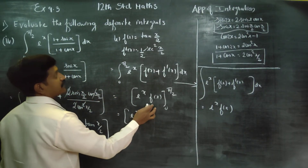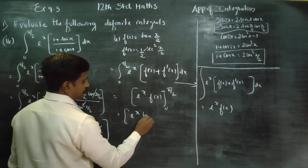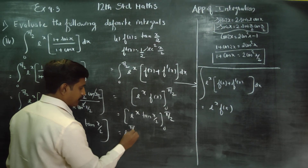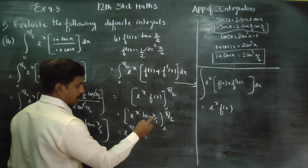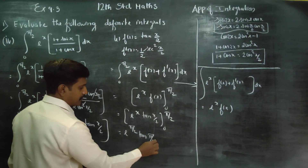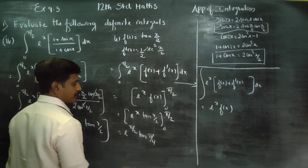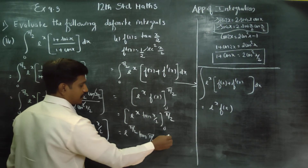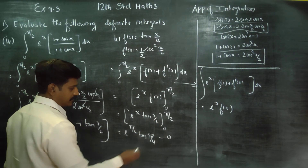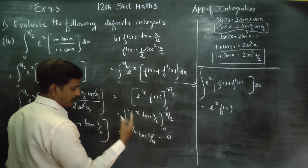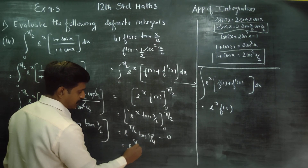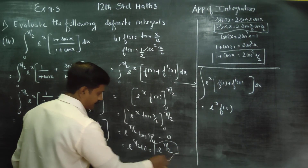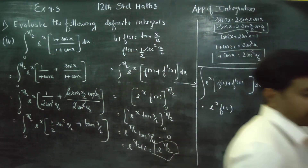Re-substituting f(x) = tan(x/2), we evaluate from 0 to π/2: upper limit gives e^(π/2) · tan(π/4) = e^(π/2) · 1 = e^(π/2). Lower limit gives e^0 · tan(0) = 1 · 0 = 0. Therefore, the final answer is e^(π/2).